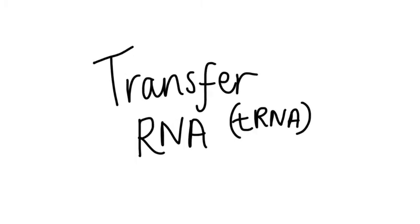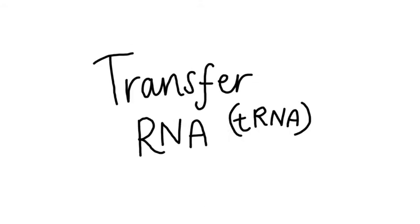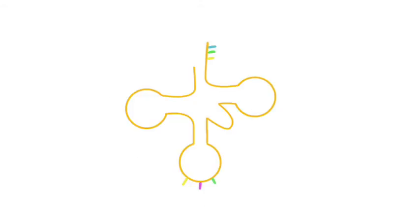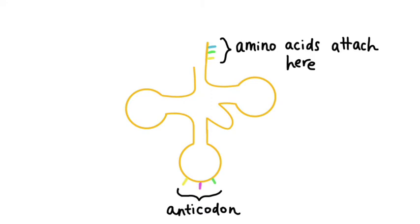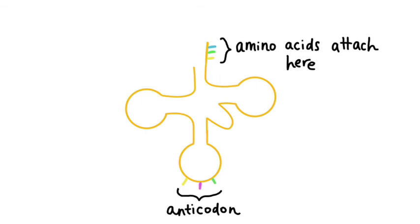The other type of RNA in this example is transfer RNA. It is a single-stranded chain but is folded into a clover leaf shape. The extended part of the chain at the top is where amino acids attach. Each amino acid has its own complementary tRNA molecule. On the opposite end, there are three organic bases known as the anticodon. In protein synthesis, the anticodon pairs with the three complementary bases — the codon — of mRNA.